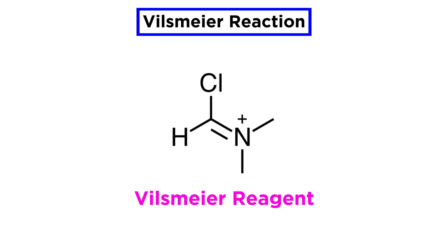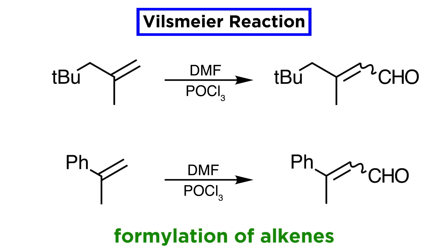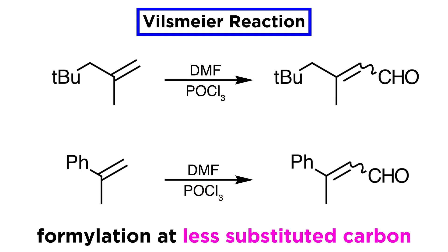The Vilsmeier reagent is a powerful electrophile, and one reason this reaction is still synthetically important nearly a century after its development is that we are still exploring the range of substrates that react with it, thus broadening the scope of this reaction. For example, simple alkenes can react with the Vilsmeier reagent, which is present once these two reagents interact, as in the first step in the mechanism we just went over. In most cases, the reaction leads to formylation at the less substituted carbon, although these reactions are not always high yielding, while also producing a mixture of E and Z isomers.